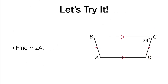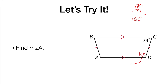Let's try a problem. This is an isosceles trapezoid — we know because the two legs are congruent. We're finding the measure of angle A. We know this is isosceles, so we can find angle D first: 180 minus 74 equals 106 degrees. Because the trapezoid is isosceles, angle A is also 106 degrees.